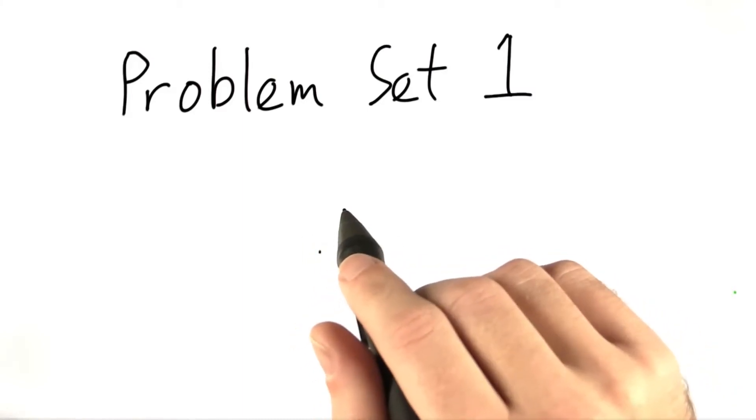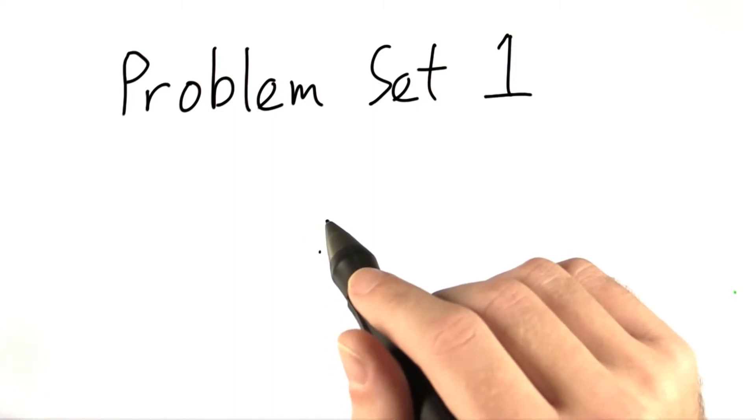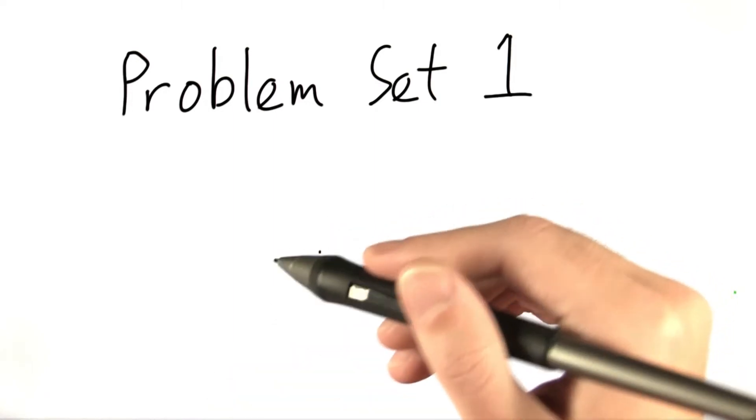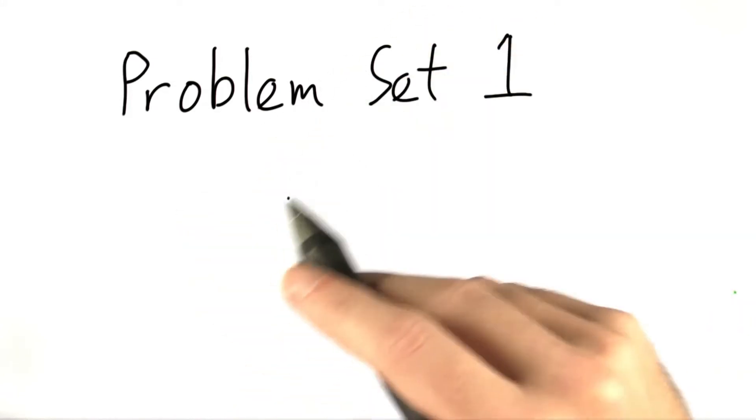Welcome to Problem Set 1. We're going to be going over running time today and what it means for an algorithm to be efficient or slow or difficult. So we're going to be going over a few problems along those lines. So why don't we go ahead and just dive right in.